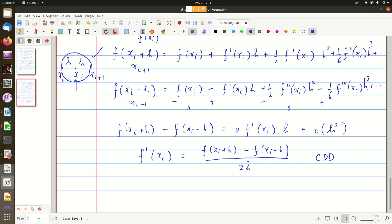I could have directly chosen all these higher order terms to be 0 and directly obtained from here f dash of xi to be equal to f of xi plus h minus f of xi, right? This one I can take to this side and divide by h. So this is called forward difference.